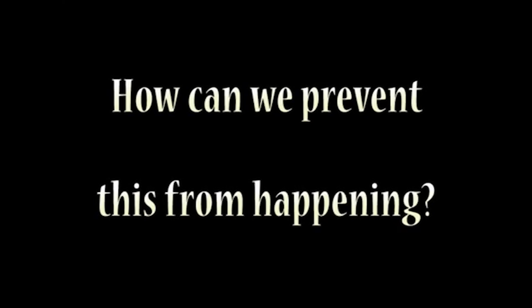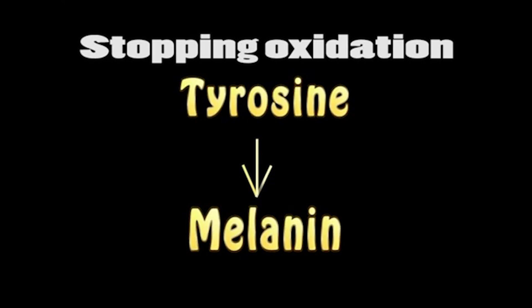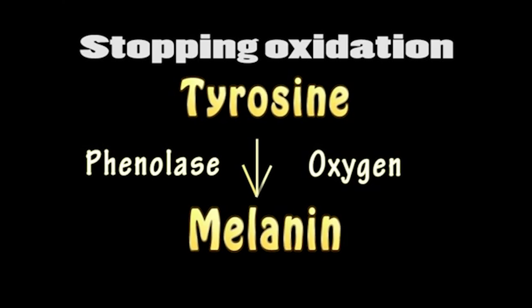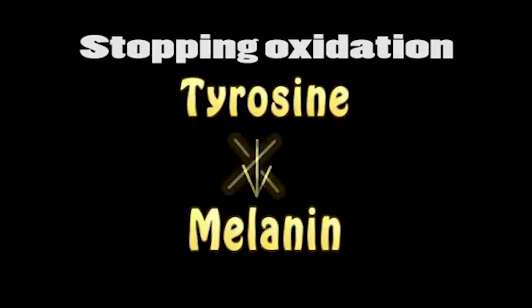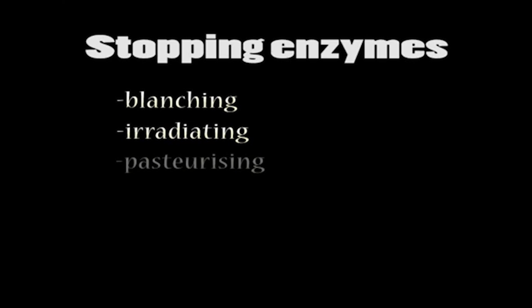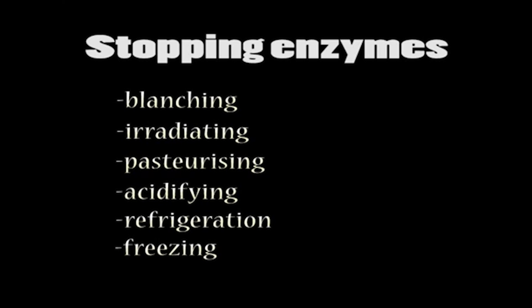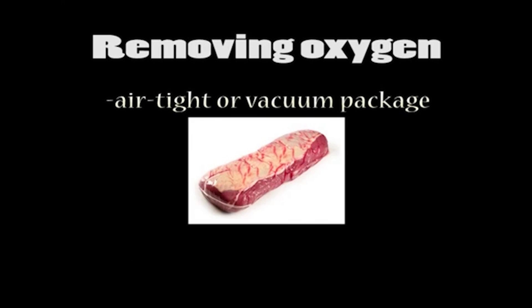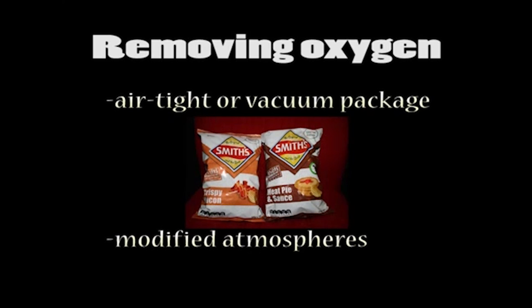To prevent apple browning, there are three active components in the browning process: tyrosine, phenolase, and oxygen. Since tyrosine is impossible to eliminate every time you cut open an apple, our choices are to inactivate the enzyme or remove the oxygen entirely. Enzyme activity can be ceased by denaturing the enzyme through blanching, irradiating, pasteurizing, or acidifying, and can also be slowed by refrigeration or freezing. The oxygen can be removed by airtight or vacuum packing, or by modifying the atmosphere to an inert gas such as nitrogen.